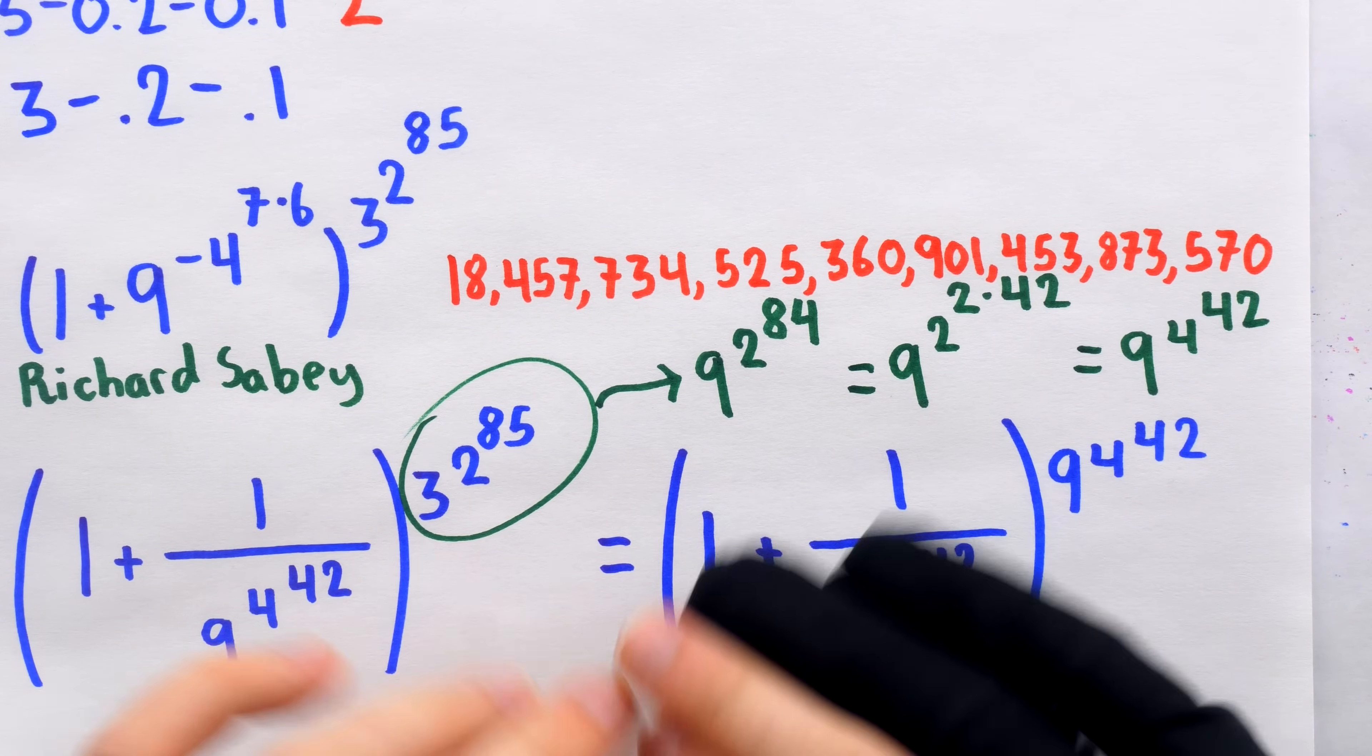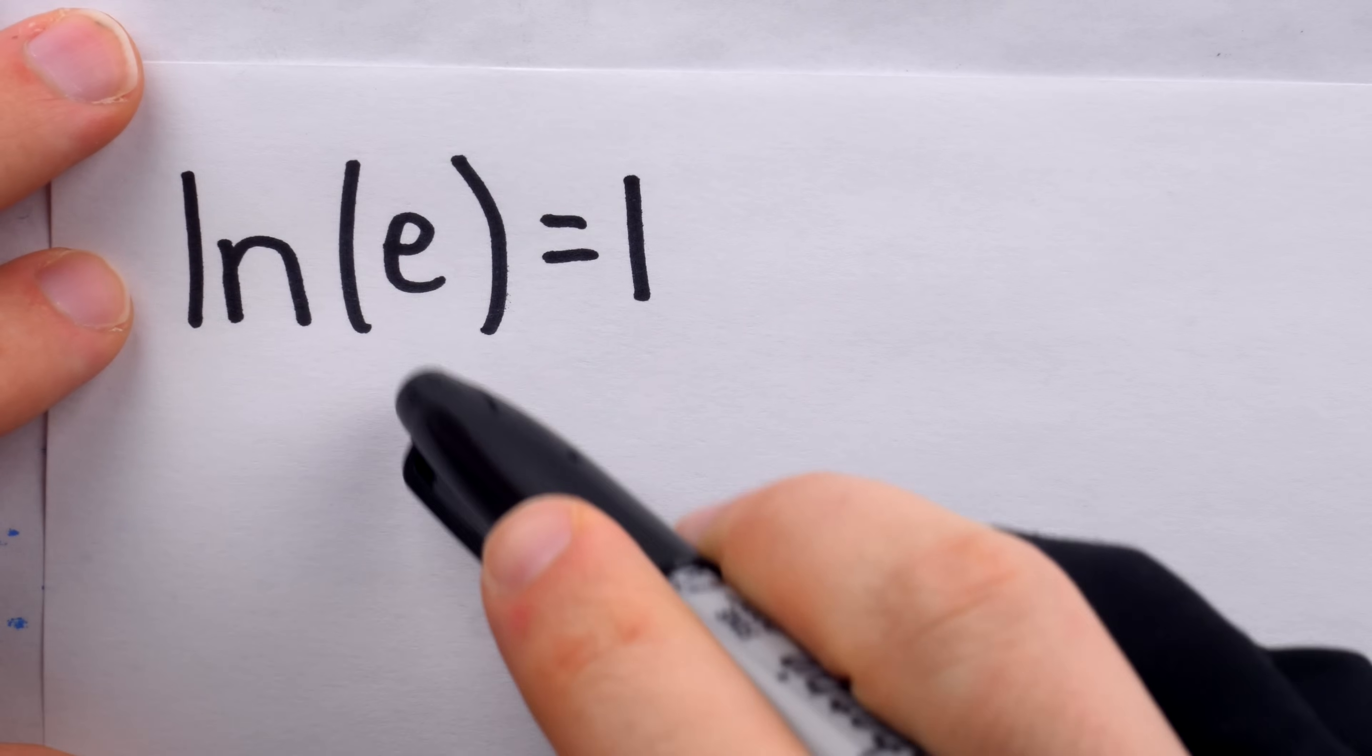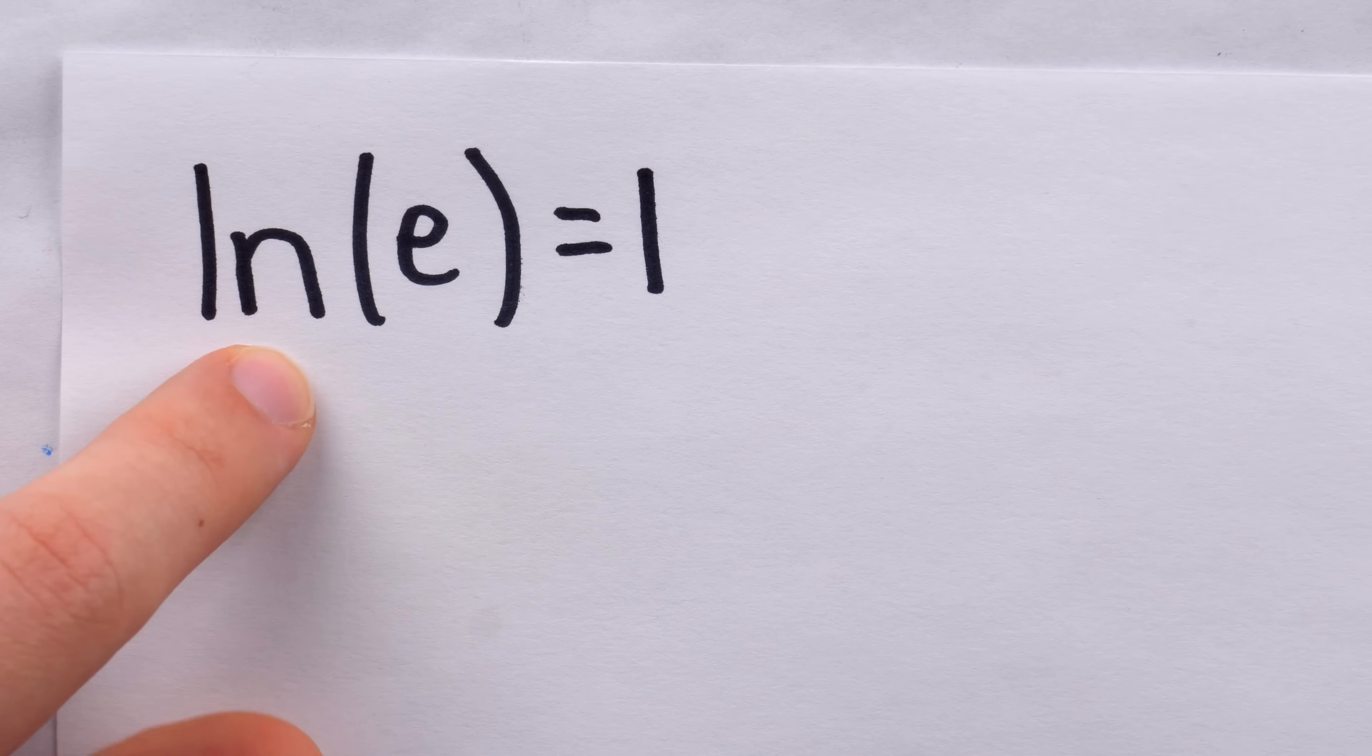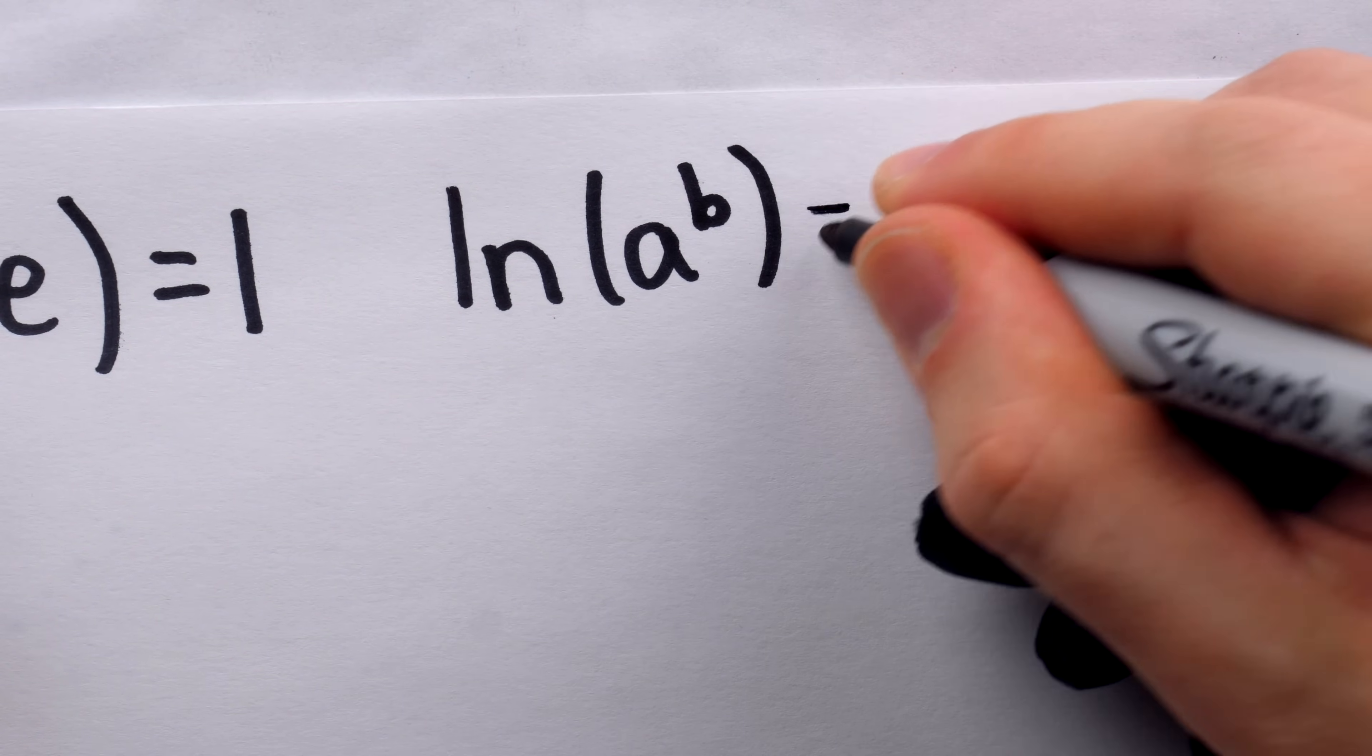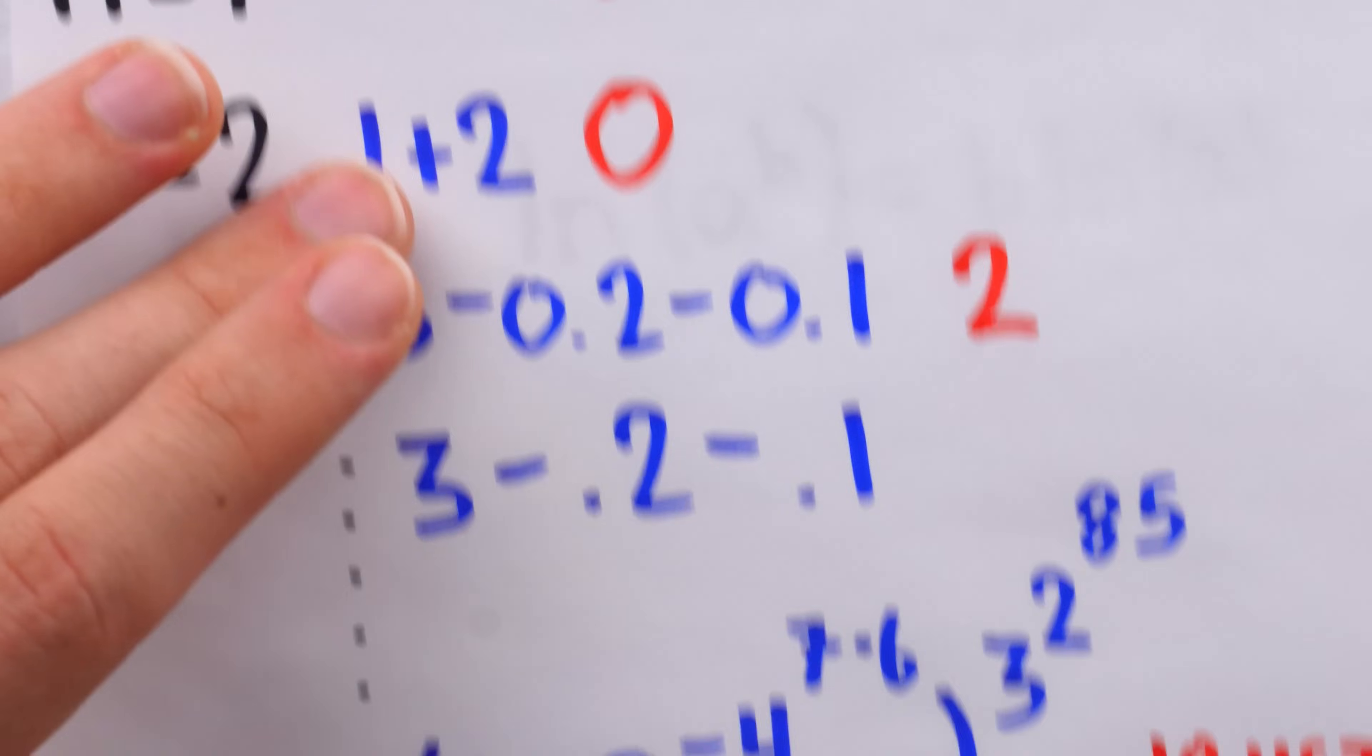There is one other way we could approach this problem of verifying that Richard Sabey's approximation of e is good, and that's to consider the natural log function. That's a function defined so that when we plug e in, we get 1. That means if Richard Sabey's approximation is good, then plugging it into the natural log function should produce something really, really close to 1. One very important rule of logarithms that we'll need is the fact that we can take an exponent on the inside out as a factor. The natural log of a to the power of b, we can take that power out as a factor and write this as b times the natural log of a.